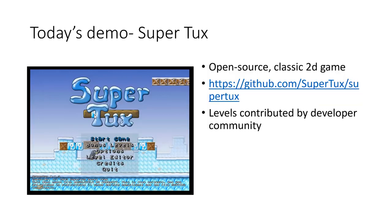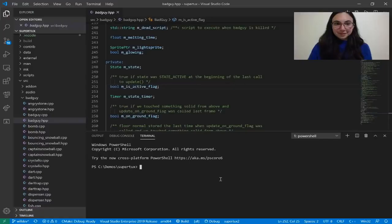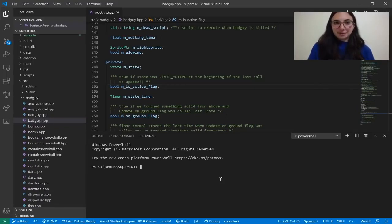For my demos today, I'm going to use the SuperTux project. It is an open source classic 2D game — you can clone the GitHub repository, which is what I did. SuperTux has a great community of developers that contribute new levels to the game, so it's a great open source project for demos because it is cross-platform. I have my SuperTux project open in VS Code on my laptop right now, and I'm going to show you some of the cool C++ language features we have in VS Code.